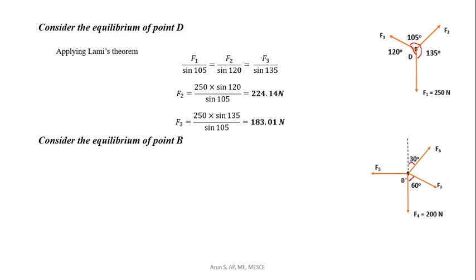Now considering point B equilibrium, applying Sigma Fy = 0: F6 cos(30°) − F4 − F3 cos(60°) = 0. Here F3 acts downward in its vertical component and F6 cos(30°) acts upward.